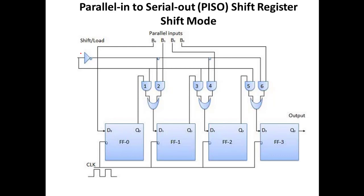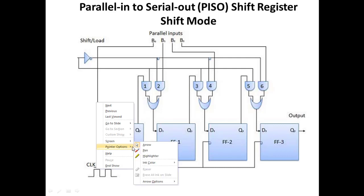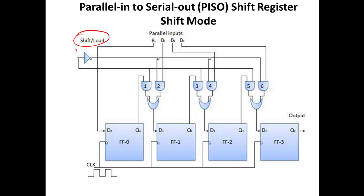In shift mode, the shift or load control input will be 1. With control input 1, the NOT gate output becomes 0, so the right-hand AND gates (2, 4, 6) have one input as 0, making their outputs 0. The left-side AND gates (1, 3, 5) now have control input 1, and their other input is the output of the previous flip-flop — Q0 feeds into the second flip-flop, Q1 into the third, and Q2 into the fourth.